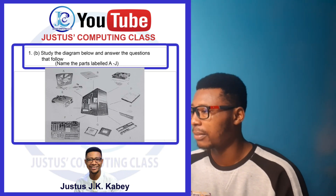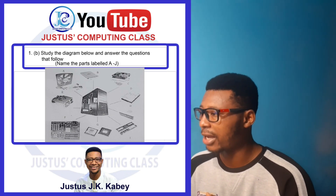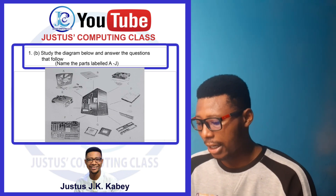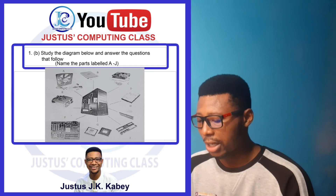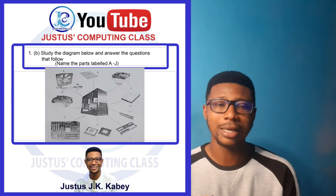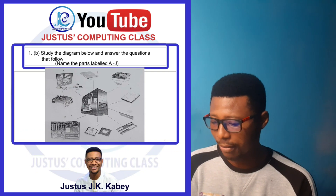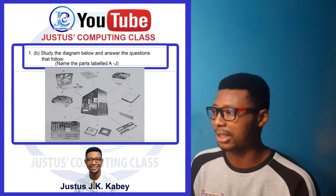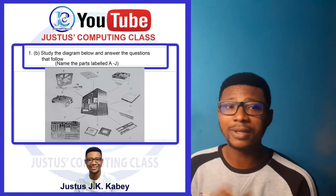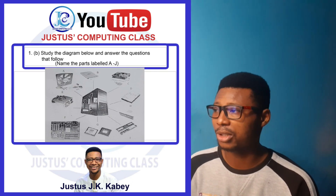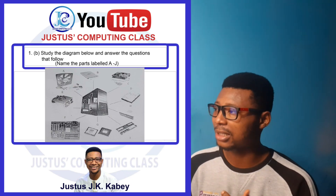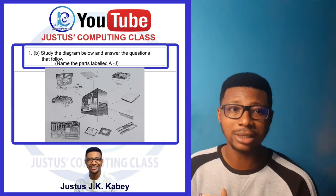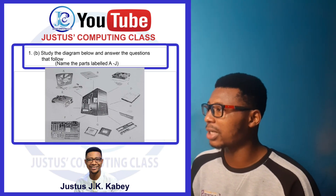Part label H is the optical drive. Part label I is the random access memory. Part label J is the system unit. The pictures are not too clear, so try to search those various names to get a clear picture of how those images look.